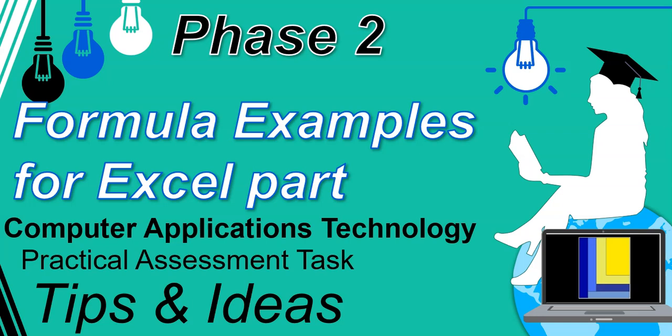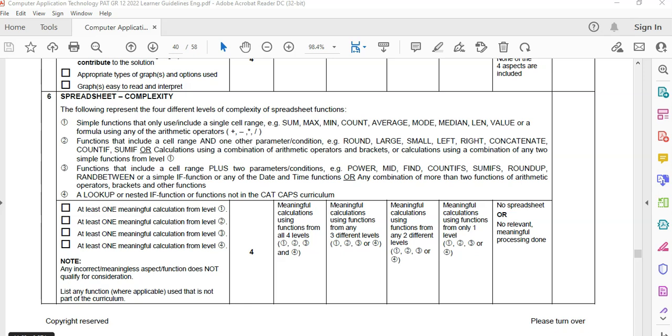Welcome to all our CAT students who are trying to do their CAT PAT. In this video we're looking at some tips and ideas that can help you with the formula part of your Excel, which is part of your Phase Two. You should have your spreadsheets all looking nice and pretty with all the data already in there, but how do we get the marks for all the formulas that we require? We're going to look at the rubric for the 2022 PAT.